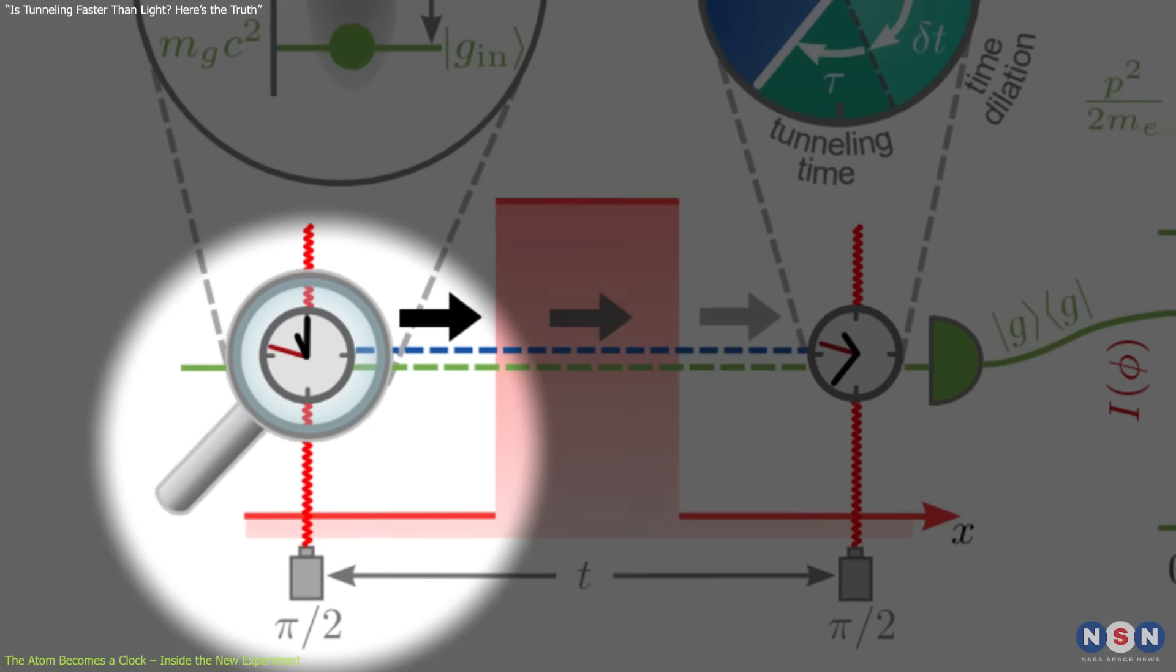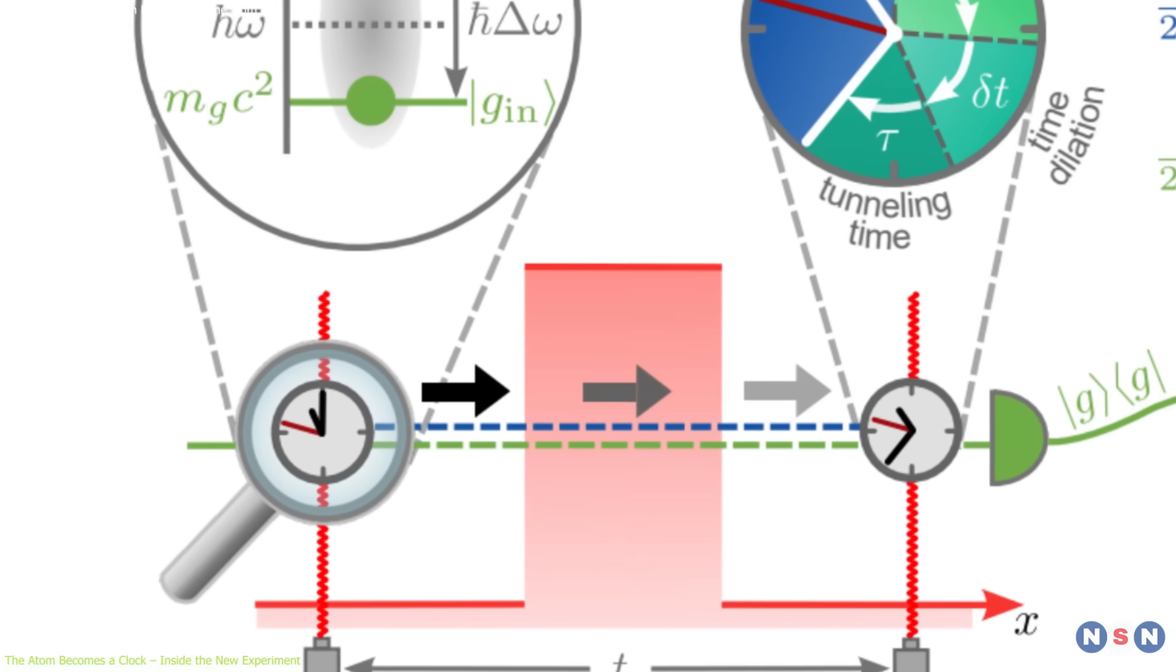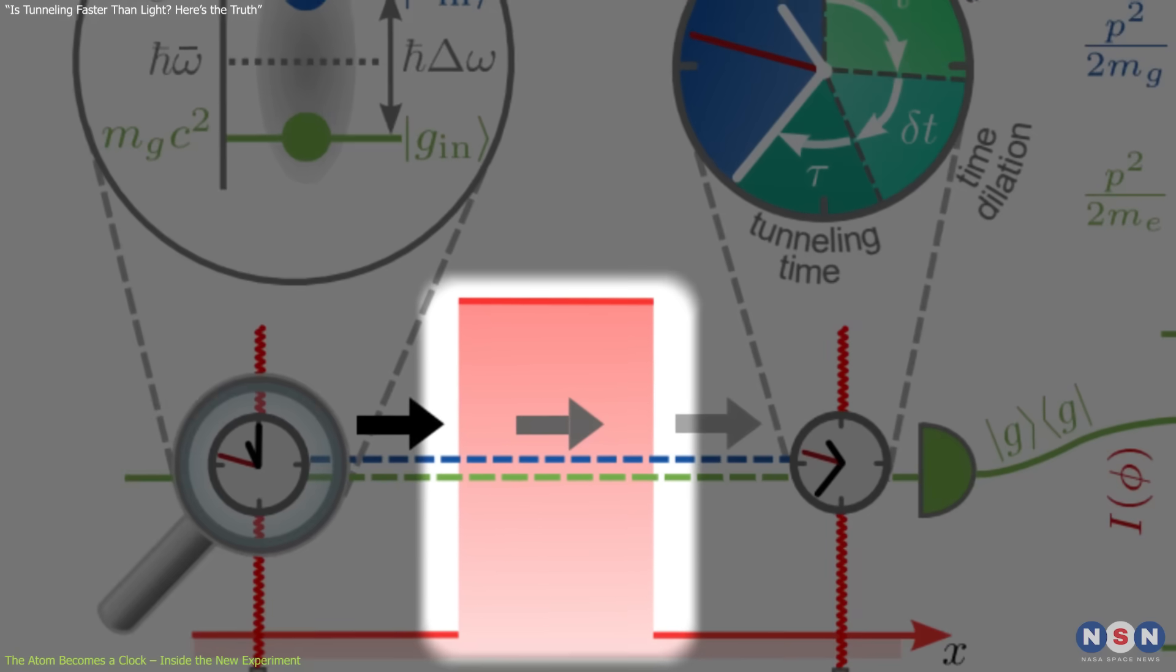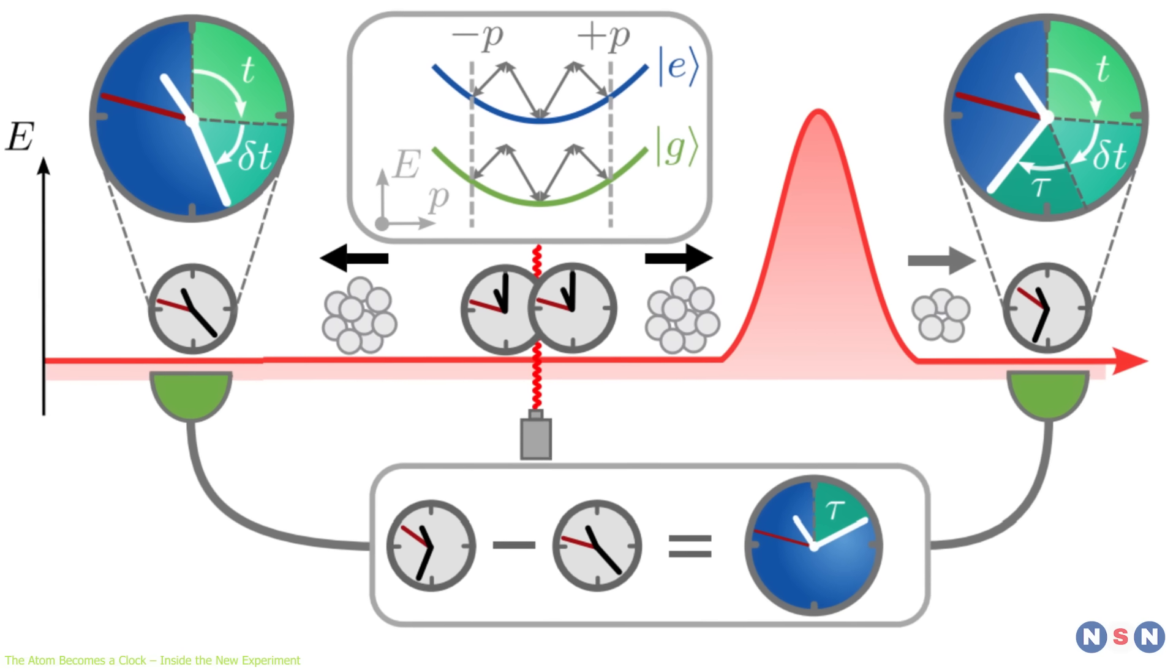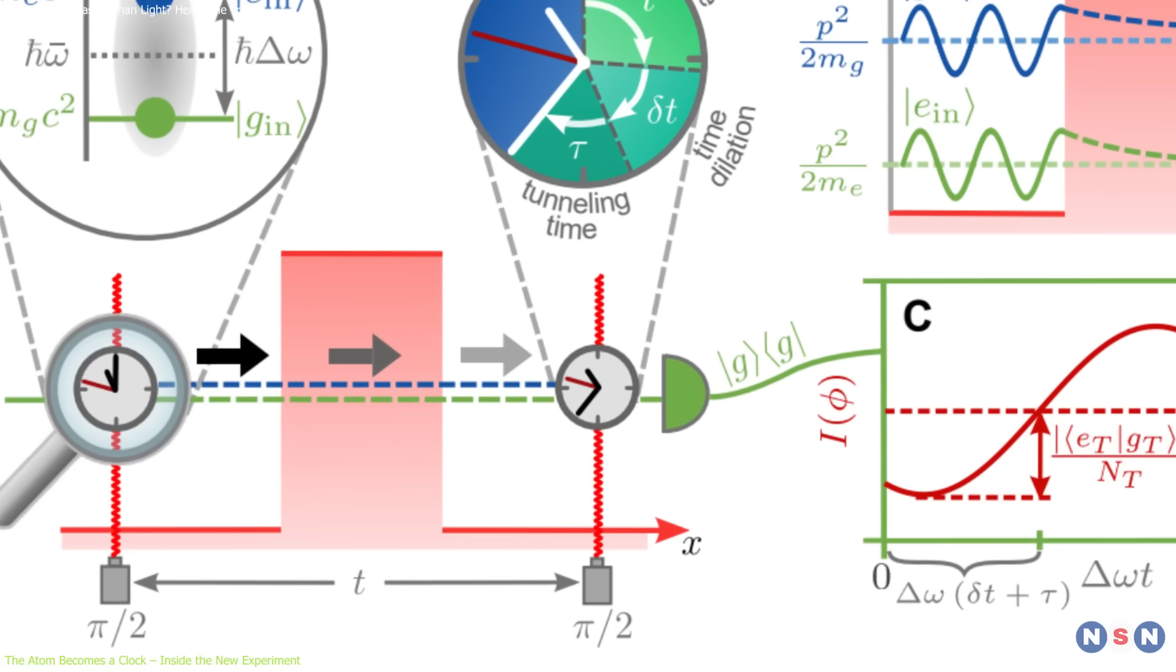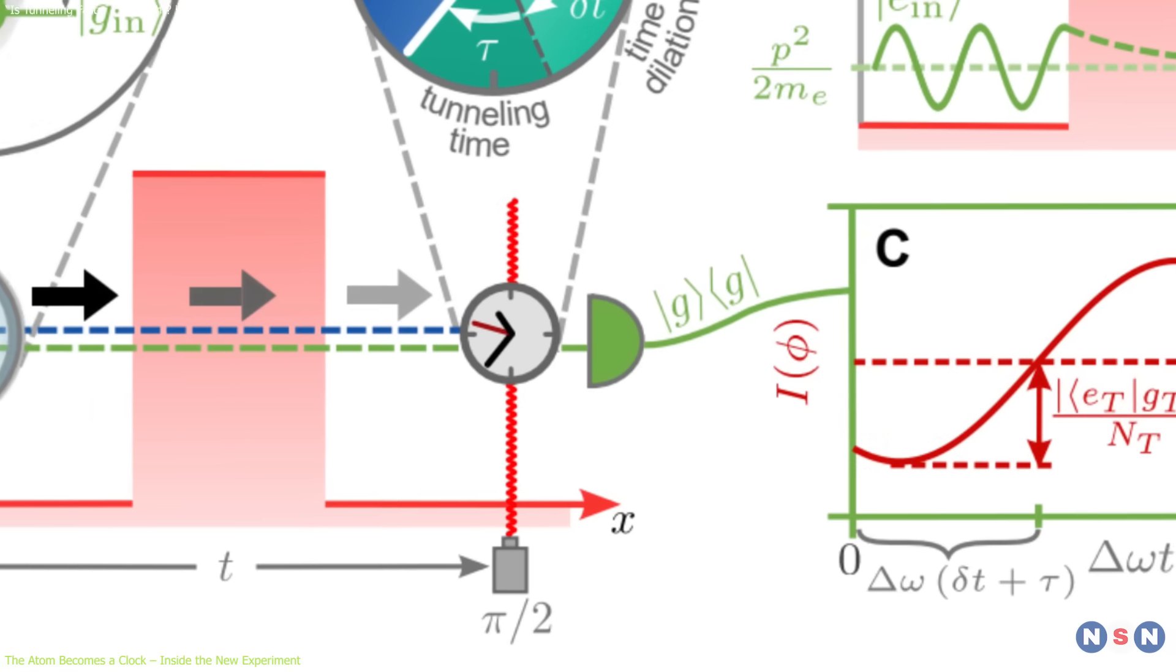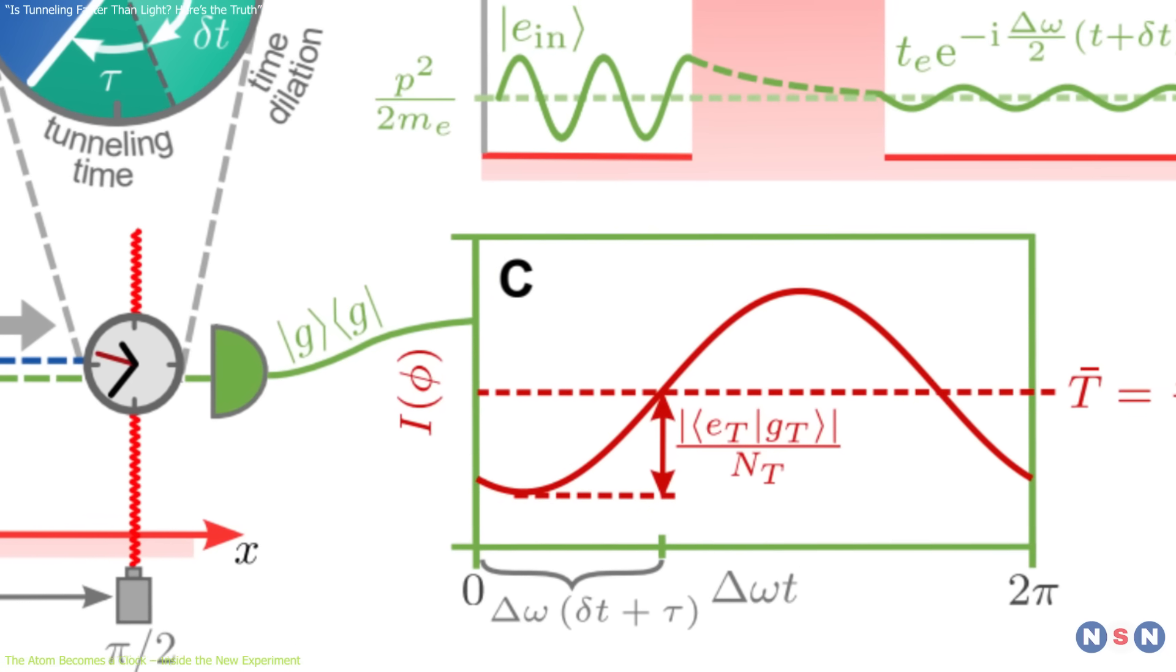First, a pi over two pulse initializes the atomic clock by equally mixing the two internal states. Then, the atom encounters a potential barrier and may tunnel through it, with each state accumulating a state-dependent phase shift based on its interaction with the barrier. Finally, a second pi by two pulse recombines the states and allows scientists to read the interference pattern, the phase difference between them.